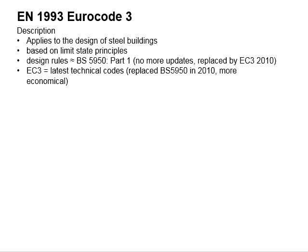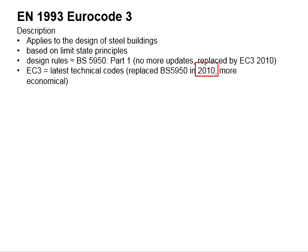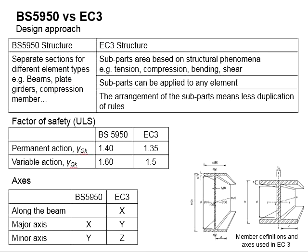In the previous video we mentioned Eurocode 3, which adopts similar design rules as per BS5950. Previously the design of steel structures was all based on BS5950. However, after 2010 it was superseded by Eurocode 3 as the latest technical code for structural steel design. In this video we are going to discuss some common differences between BS5950 and Eurocode 3.